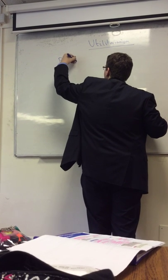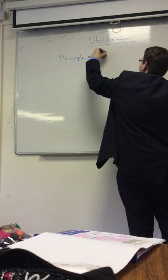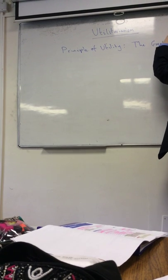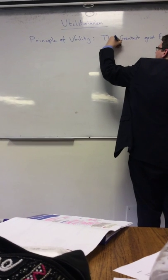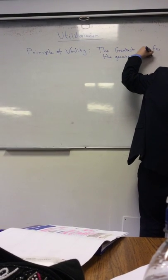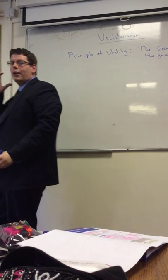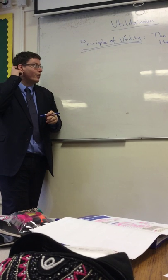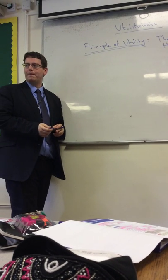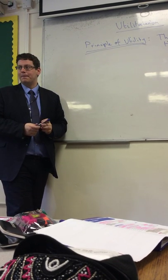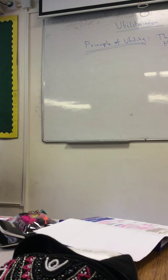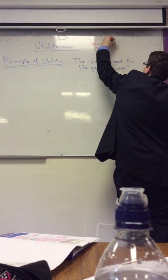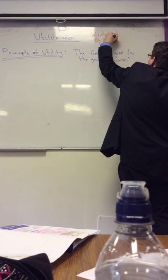This ethical theory starts with a main idea called the principle of utility. Write this down. The principle says that you should always try to achieve the greatest good for the greatest number. Because it's about achieving an outcome, it is a teleological ethical theory — teleological because it's about outcomes or consequences.